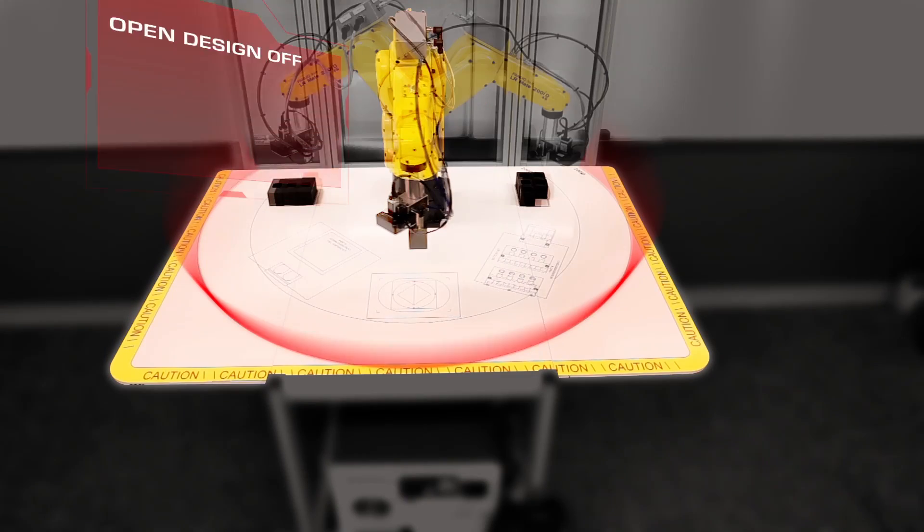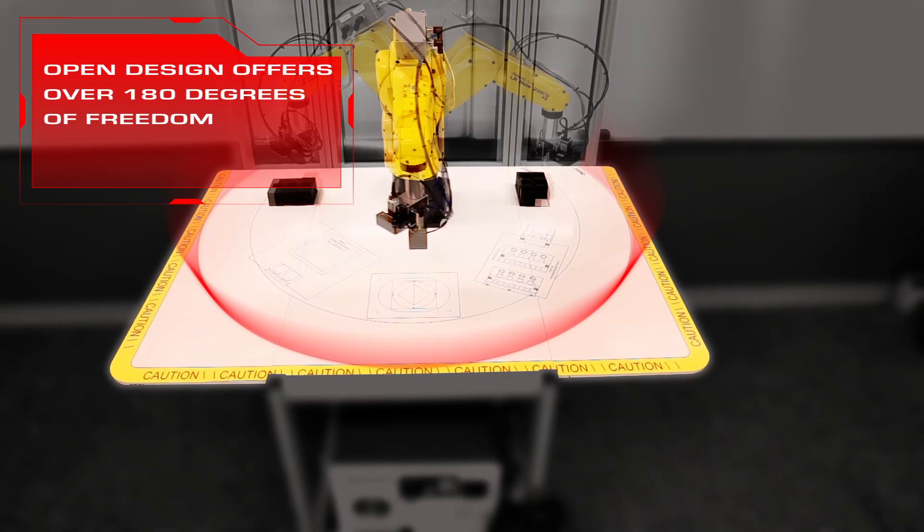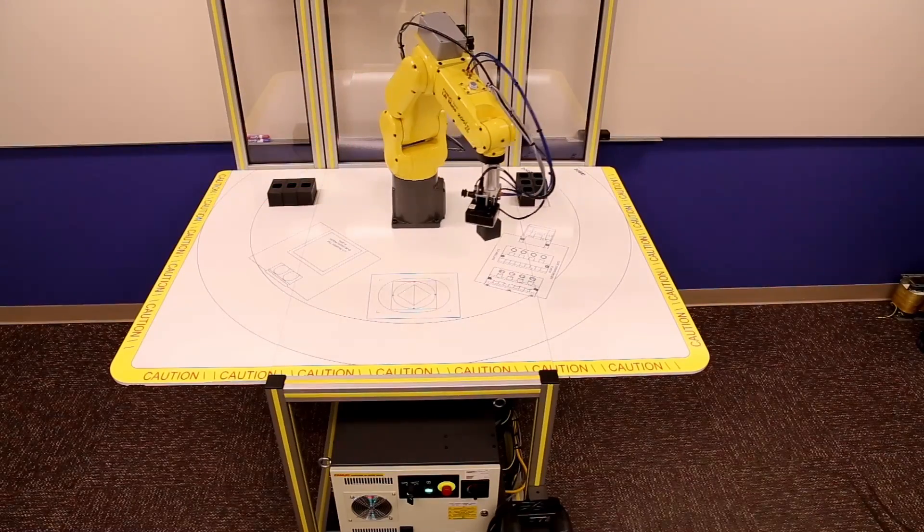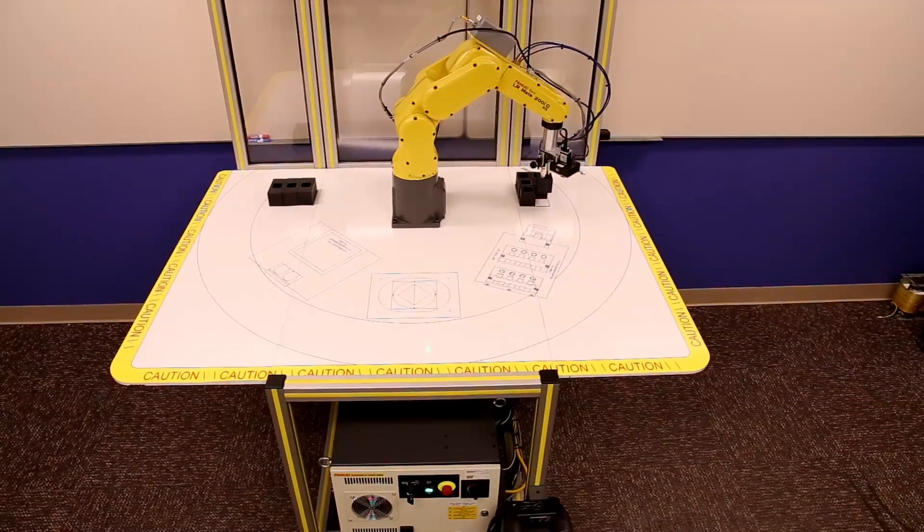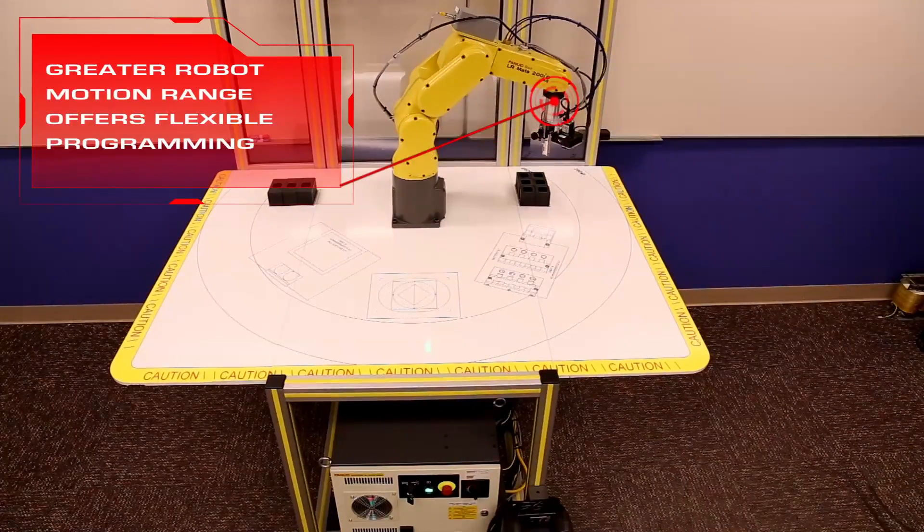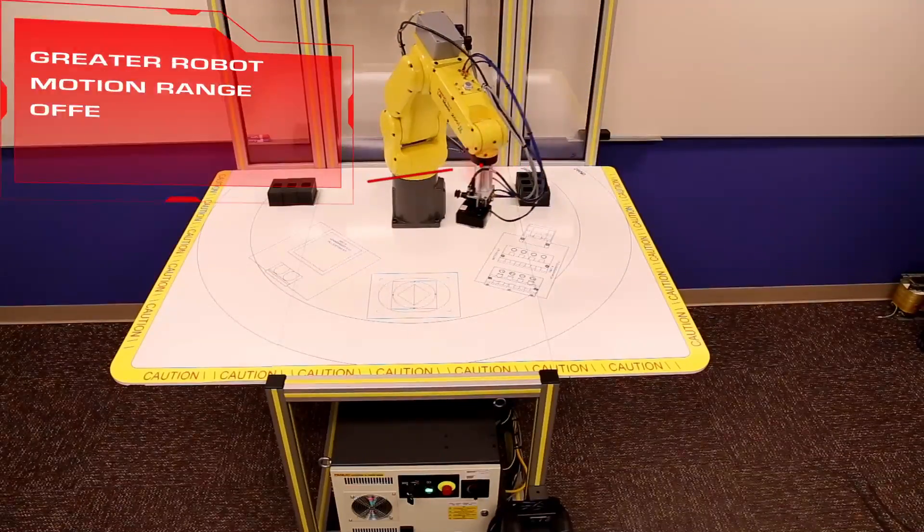The open tabletop design of the Fenceless Zones CertCart offers the robot over 180 degrees of movement. This wide robot motion range offers greater programming flexibility and operation.